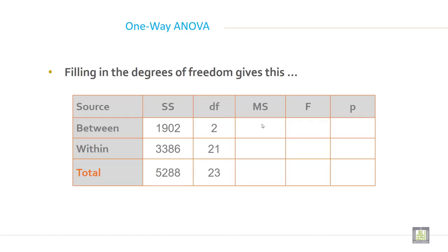After calculating all the degrees of freedom, the between-group degree of freedom is 2, the within-group degree of freedom is 21, and the total degree of freedom — adding 21 and 2 — is 23.